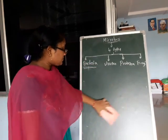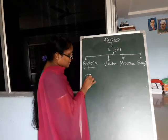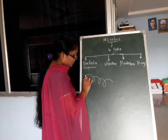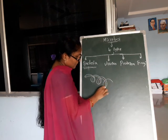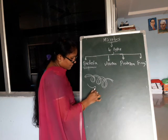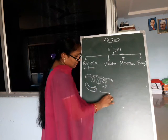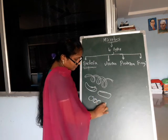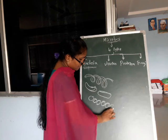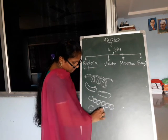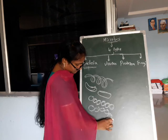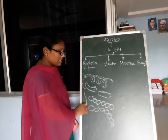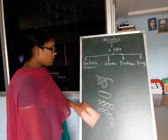Bacteria structure — it may be spiral shape, rod shape, or round shape like this. We can see bacteria only under a microscope.